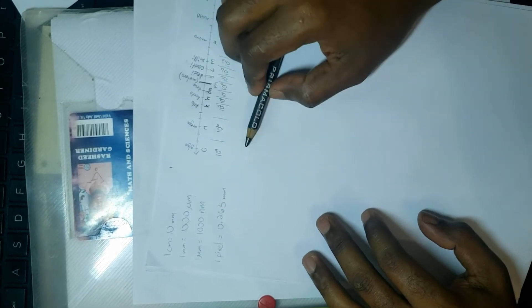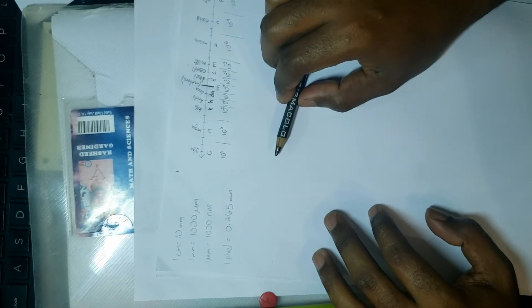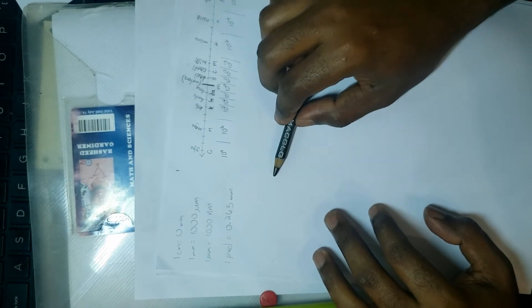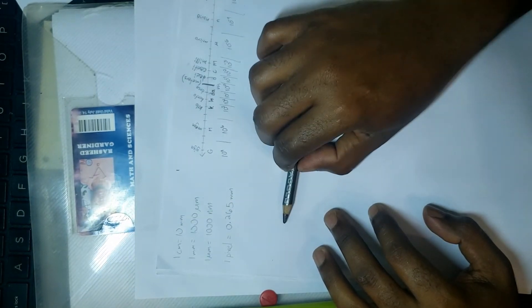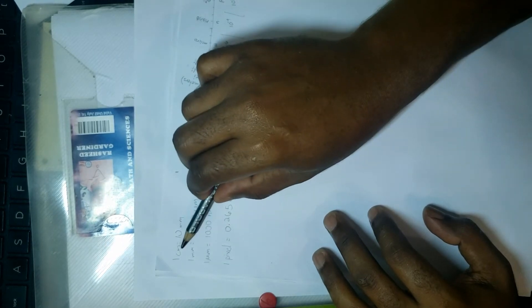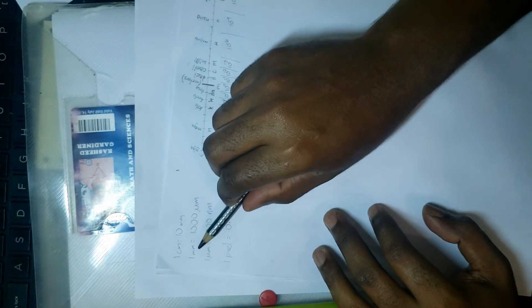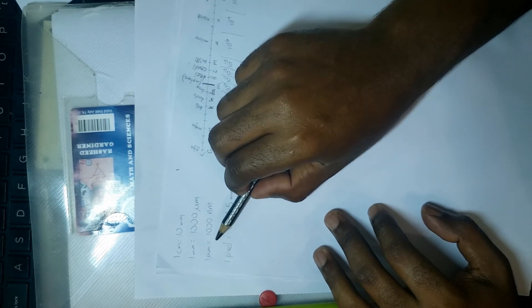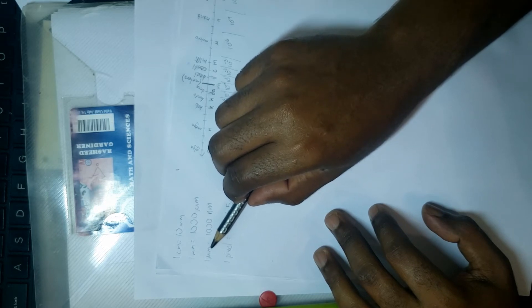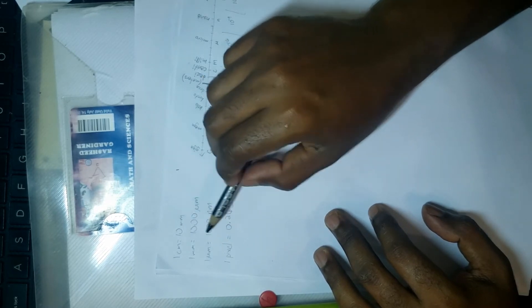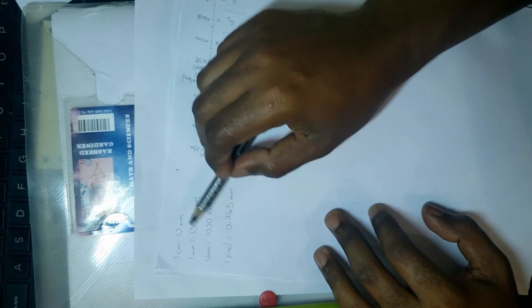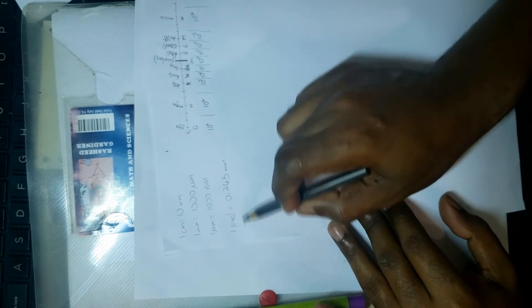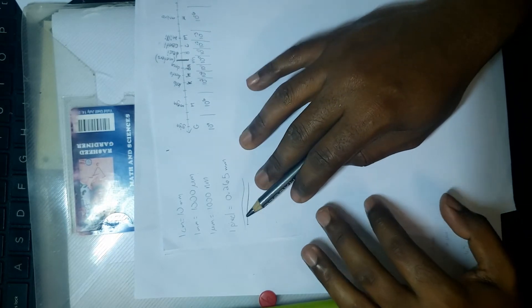Before we even begin to do any calculations, one of the first things you need to know is how to do conversions. I'll not spend much time going over that—you should be familiar with conversions by now. Some simple conversions when dealing with the microscope: you have to know how to go from centimeter to millimeter, millimeter to micrometer, and sometimes especially with electron micrographs, micrometers to nanometers.